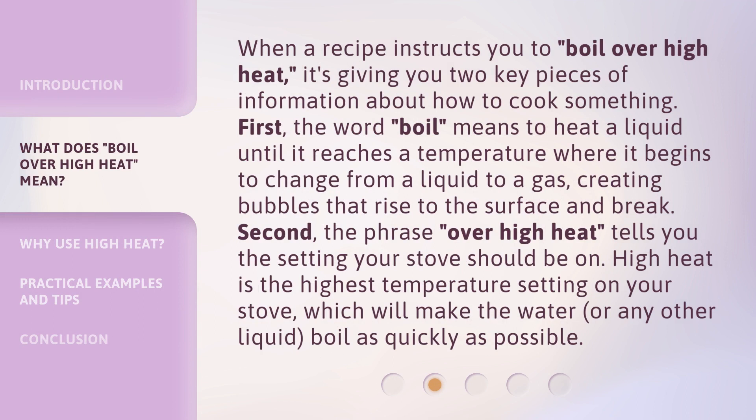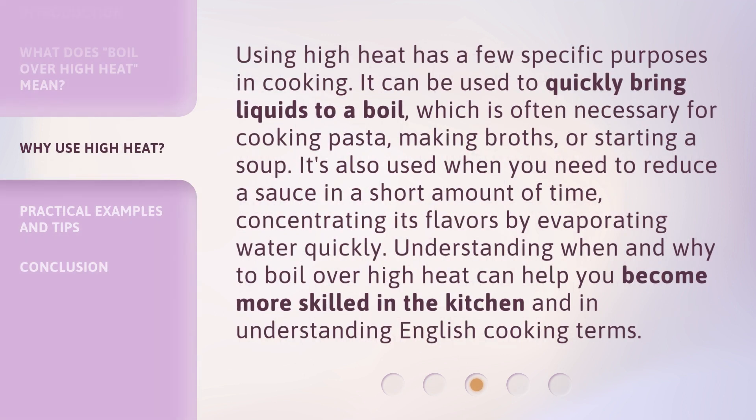When a recipe instructs you to 'boil over high heat,' it's giving you two key pieces of information about how to cook something. First, the word 'boil' means to heat a liquid until it reaches a temperature where it begins to change from a liquid to a gas, creating bubbles that rise to the surface and break. Second, the phrase 'over high heat' tells you the setting your stove should be on — high heat is the highest temperature setting on your stove.